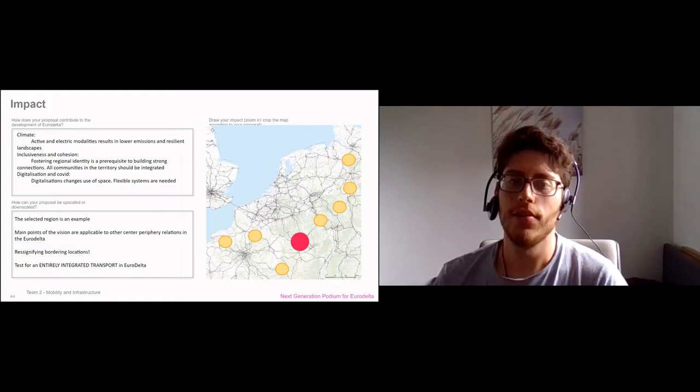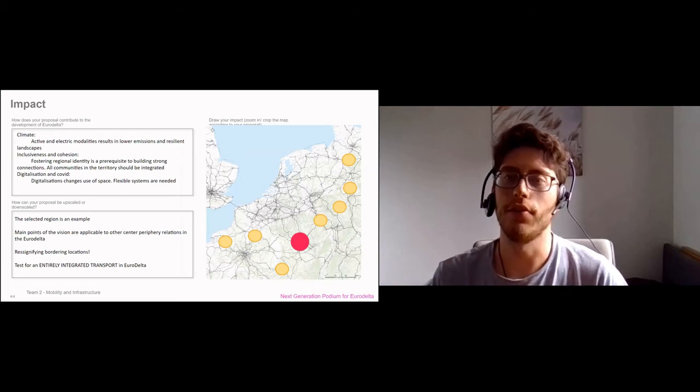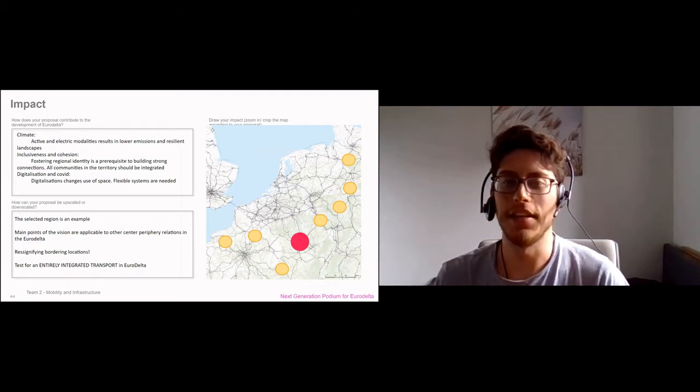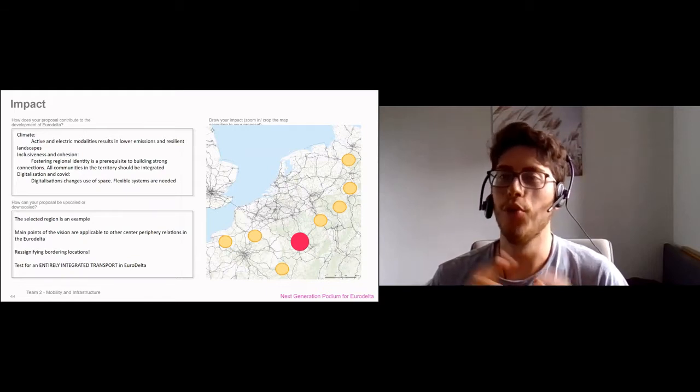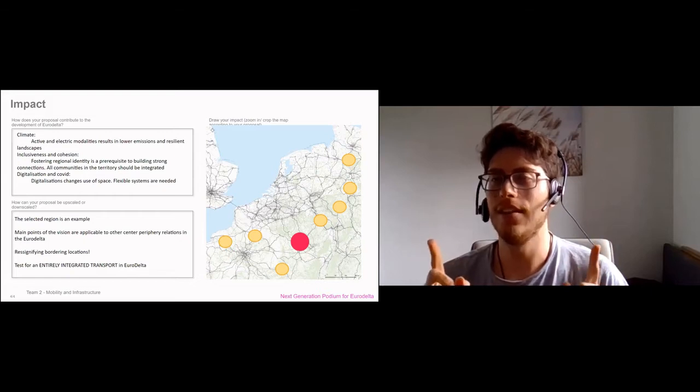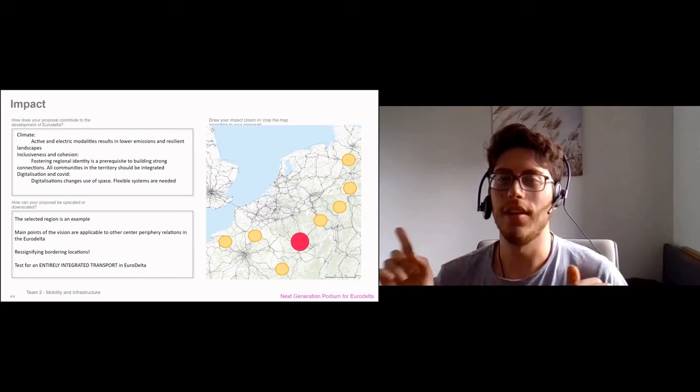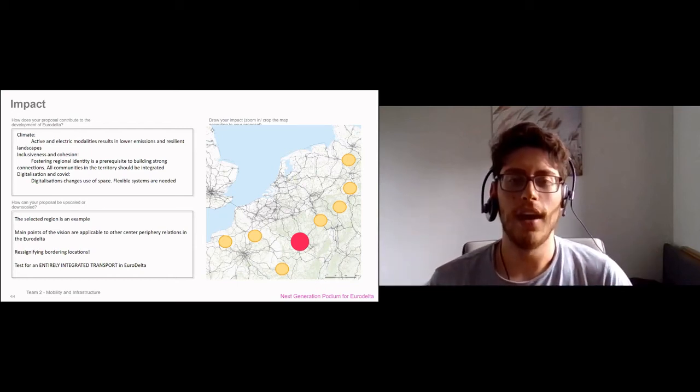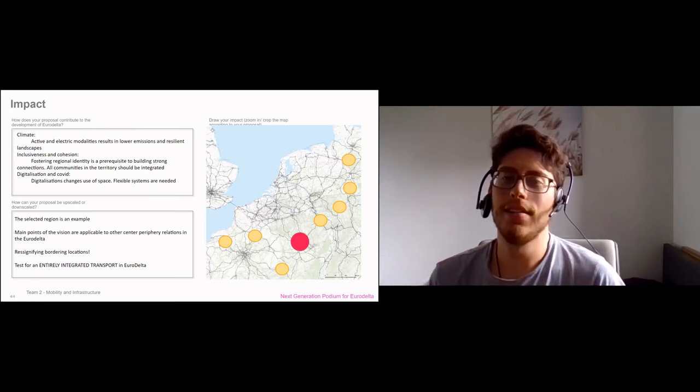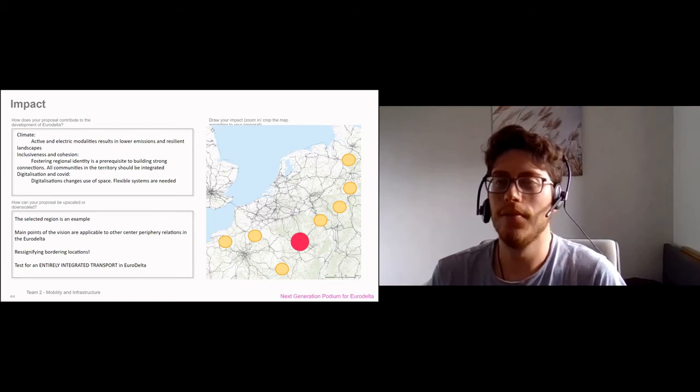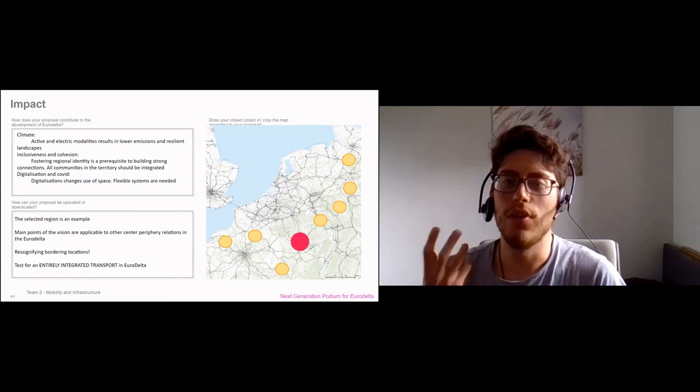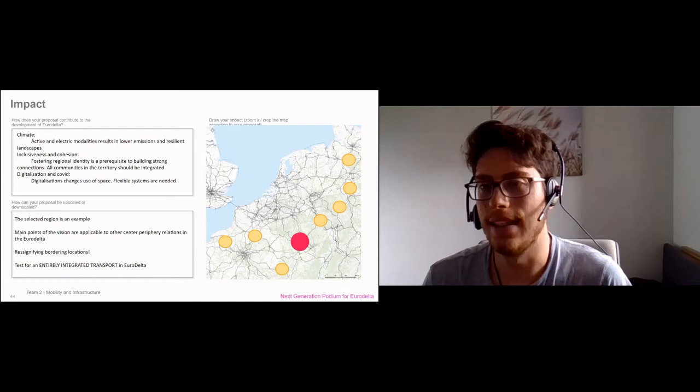Our impacts: we are creating a net zero and fully inclusive territorial strategy where all smaller towns are included. We are creating a flexible and resilient transport system. The selected region is a great example for other urban regions in the Eurodelta receiving less attention. We have a test for an entirely integrated transport in the Eurodelta with this integrated technology and ticketing system, which will be upscaled so that by 2050 the full Eurodelta will be fully reachable with a single unified transport card. Main points of the vision are applicable to other center periphery relations, and we can resignify border locations to create a fully new Eurodelta identity. Thank you.